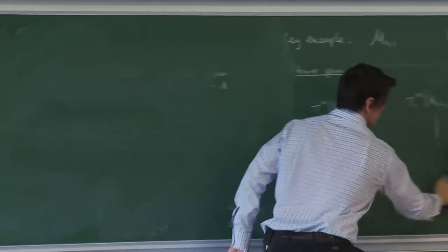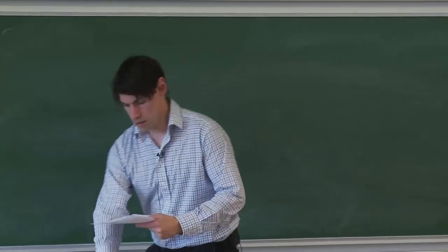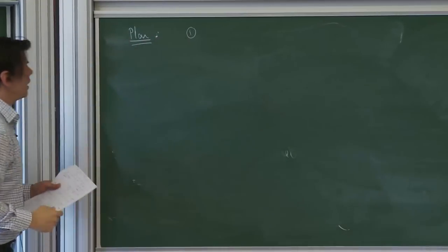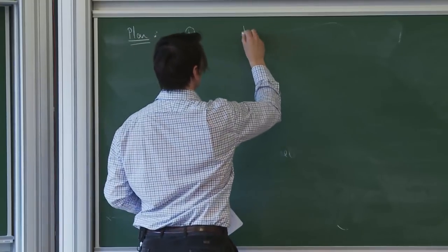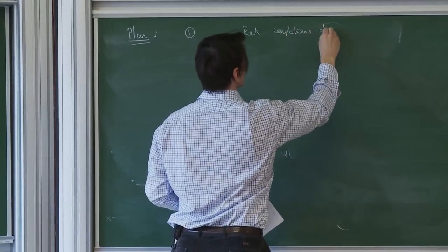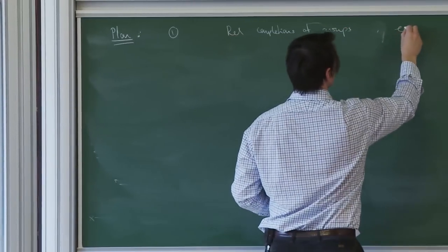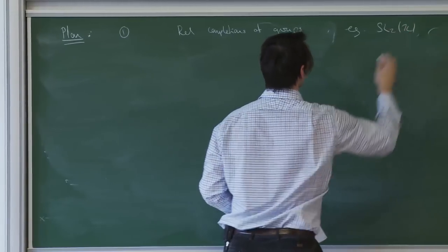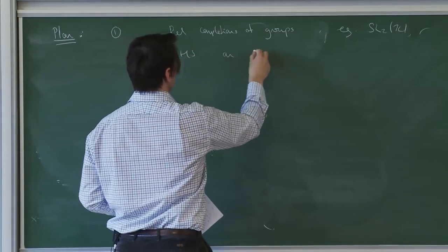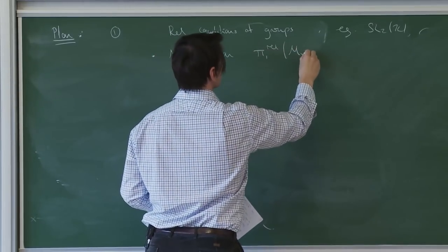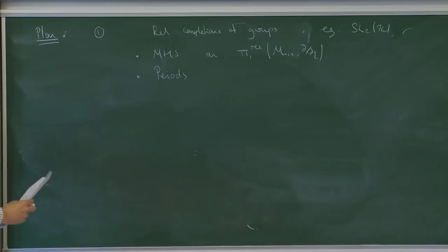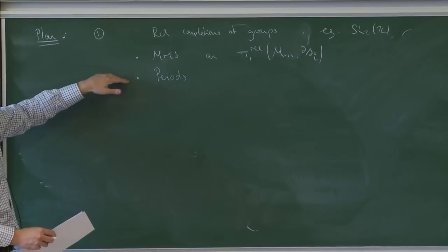The plan is to have two parts. The first part — this afternoon, after the break — is to study and define relative completions of groups, a purely group-theoretic treatment focusing on SL2Z. Then I want to explain that there is a mixed Hodge structure on this relative completion, then explain what the periods are — given by certain integrals generalizing Eichler integrals, very classical integrals of modular forms from zero to infinity.